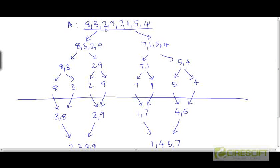What will the algorithm do? It will divide this overall problem into two subproblems. The overall problem had a size of 8, so the two subproblems are going to have a size of 4 each. The first half of A will be converted into one subproblem, and the second half will be converted into the second subproblem. These two subproblems have a size of 4, and when we recursively call merge sort on these smaller subproblems, they in turn will be split into more smaller subproblems.